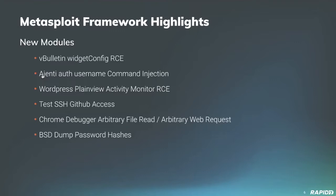Vulnerable versions of the Plain View Activity Monitor WordPress plugin allow for remote code execution on the target via the IP POST parameter, enabling an attacker with WordPress credentials to run code as the web server user. If you'd like to see a demo of this module, there's one in the recording of the last demo meeting up on YouTube.